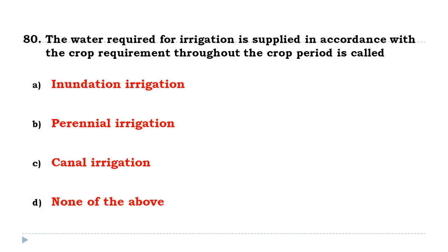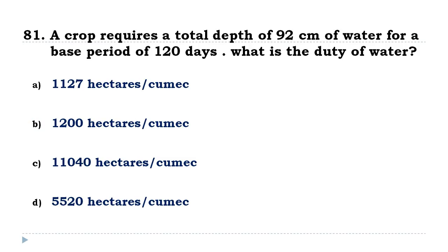Water required for irrigation is supplied in accordance with the crop requirement throughout the crop period, called perennial irrigation. A crop requires a total depth of 92 cm of water for a base period of 120 days. The duty of water is 1127 hectares per cubic meter per second.